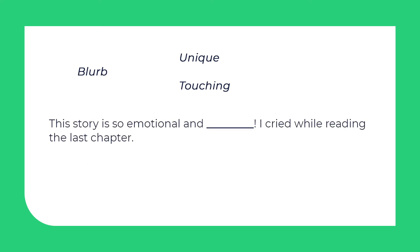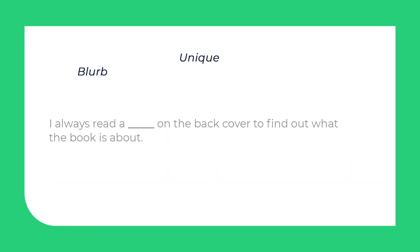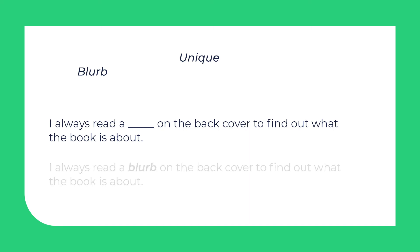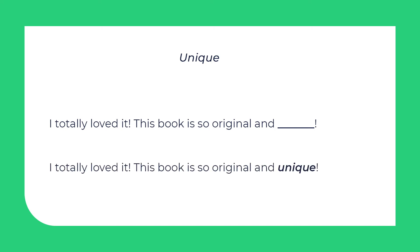Sentence 6: This story is so emotional and touching, I cried while reading the last chapter. Sentence 7: I always read a blurb on the back cover to find out what the book is about. Sentence 8: I totally loved it — this book is so original and unique.